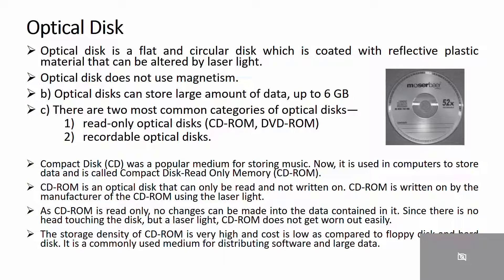Optical disk is a flat and circular disk coated with reflective plastic material that can be altered by laser light. Optical disk does not use magnetism and can store a large amount of data up to 6 GB. There are two most common categories of optical disk: read-only optical disks, which include CD-ROM and DVD-ROM, and recordable optical disks, which include CDs and DVDs.